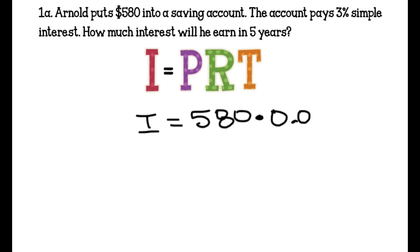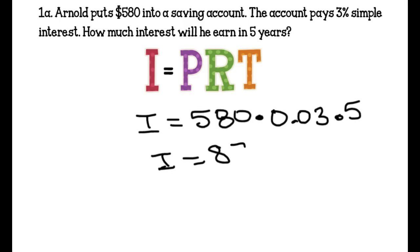The rate they told us is 3%, but we never use a percentage, so we move our decimal over to 0.03, times 5 for the number of years. We multiply all of those together, and his interest will be $87. We read the question again to make sure it asks how much interest he will earn in 5 years, so the answer is $87.